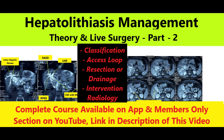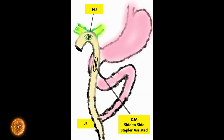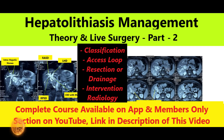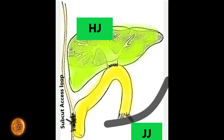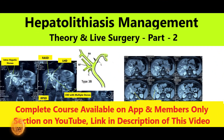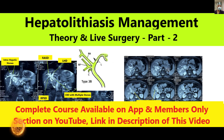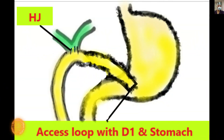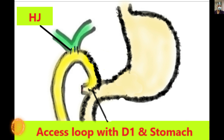Welcome back viewers. This is the second video on hepatolithiasis management — the first video has already been uploaded. The main highlights in this video will be the creation of access loops, different types of access loops, relevant literature review, and the classification of hepatolithiasis according to stone burden extent or symptoms, including Down classification and Sonoda classification, along with the advantages and disadvantages of different types of access loops. This will be a theoretical discussion only; the next video will show the live hepatolithiasis surgery.